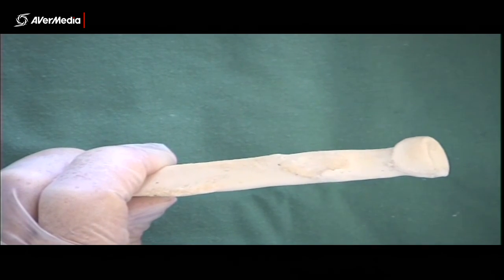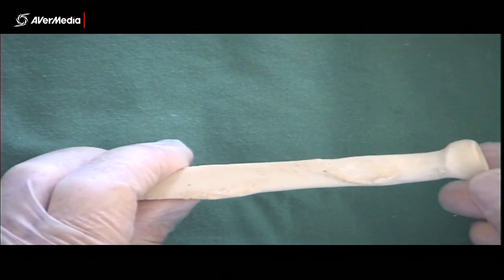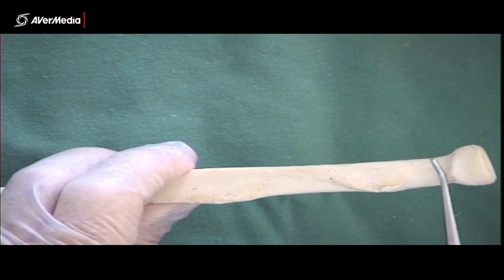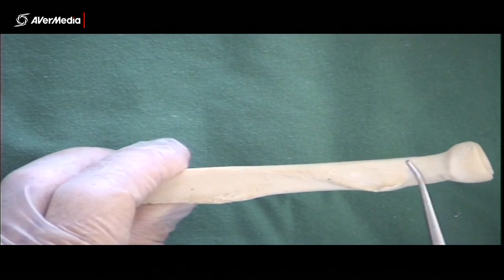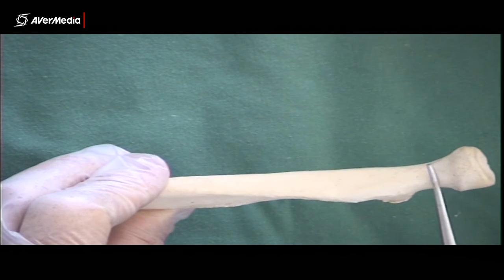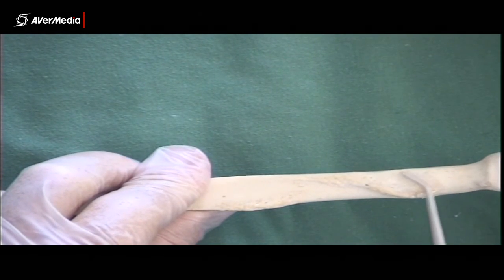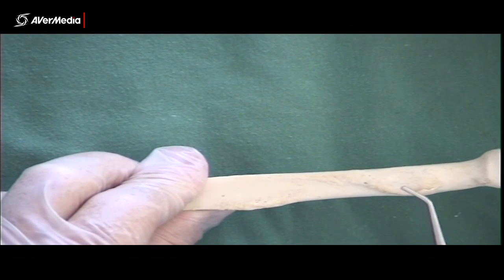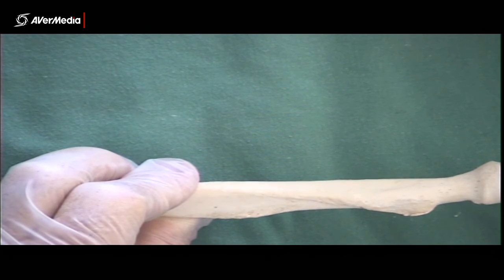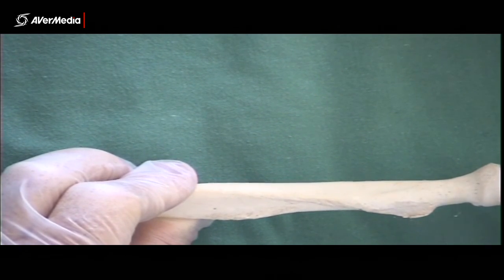Now just distal to the head, then we have the neck, that slightly narrower part there. And then distal to that, again, we have the radial tuberosity, where the distal tendon of the biceps brachii is going to attach.